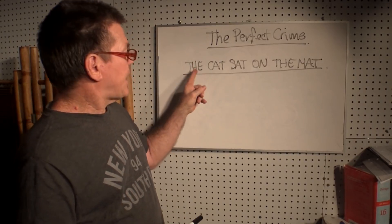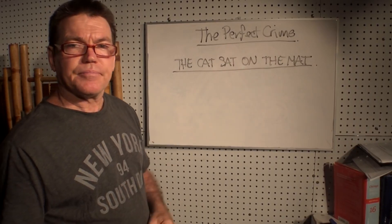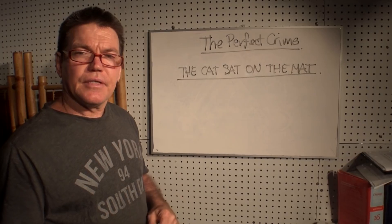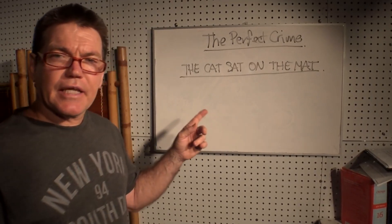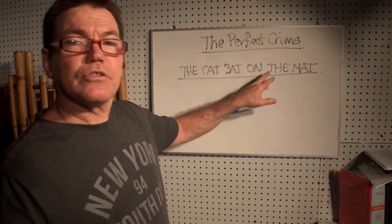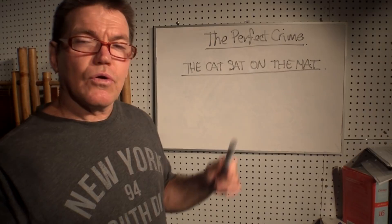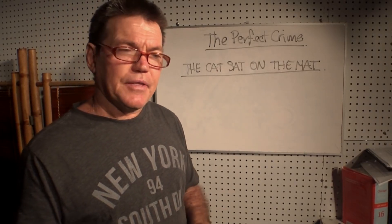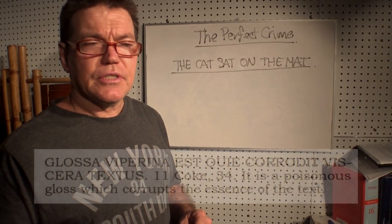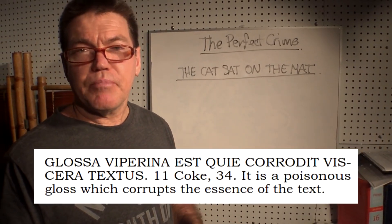Most of us will read that as 'the cat sat on the mat.' But that's a lie. And the only way you can detect that that's a lie is by knowing the grammatical truth of that type of text. That's called a glosser. But in the Black's Law Dictionary, it's a corrupt gloss that corrupts the essence of the text, which is the meaning of the text.